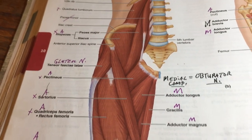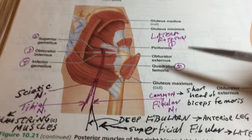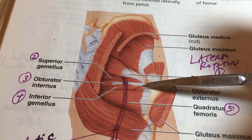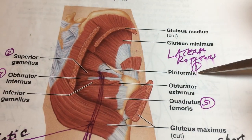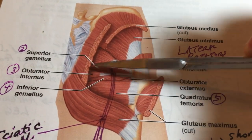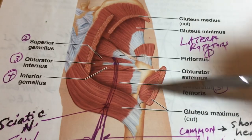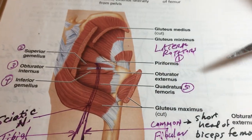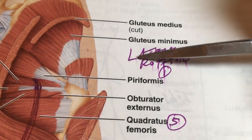Going deep to these muscles, we learn five lateral rotators of the hip. Looking at this view, we have: piriformis, superior gemellus, obturator internus, inferior gemellus, and obturator femoris. What they all have in common is that they are lateral rotators of the hip.